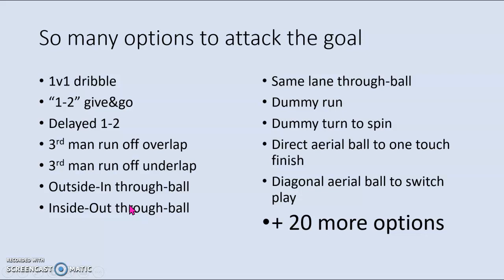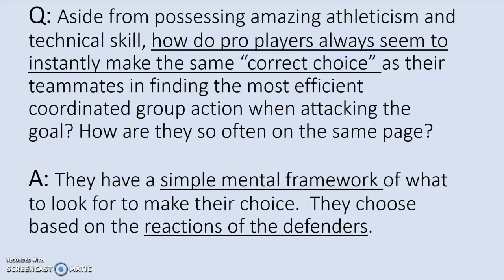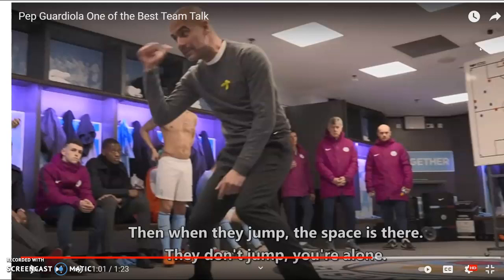So when we're attacking the goal, there's plenty of options in terms of combination play, and all this stuff works. So when it comes to the pro level, how are they always — aside from just being amazing players — how are they always making the correct choice as a group? It's almost like they're psychically communicating about which group action they're going to do. How they do it is they have the same mental framework to make the choice, and specifically they're reading the reactions of the defenders to make their movements.